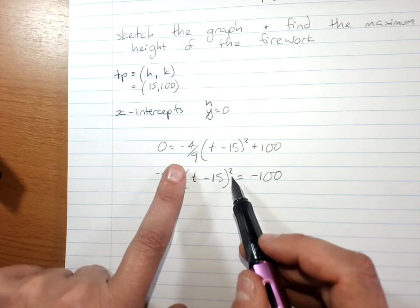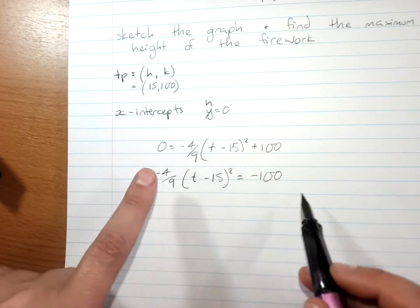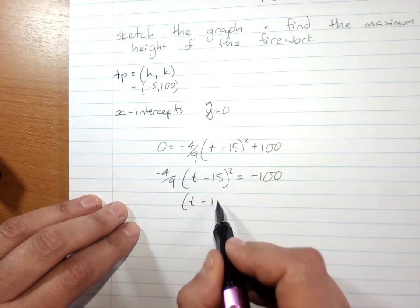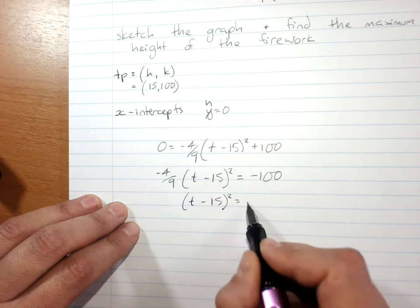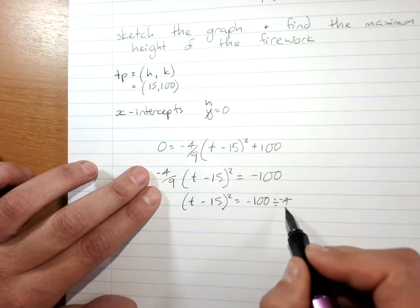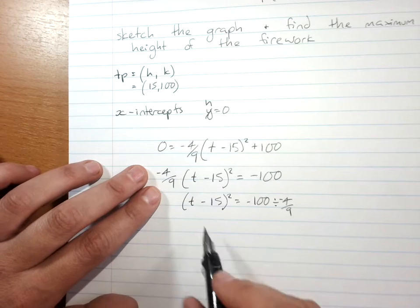We're going to get down to t minus 15 squared. So I'm dividing both sides by negative 4 over 9. Simplify that on your next line.